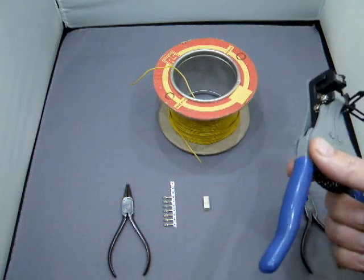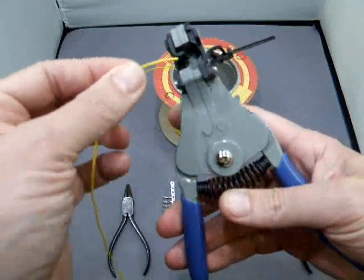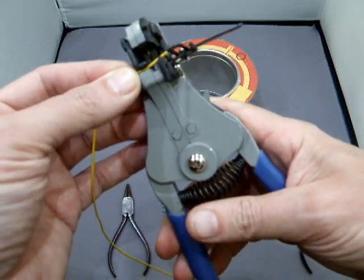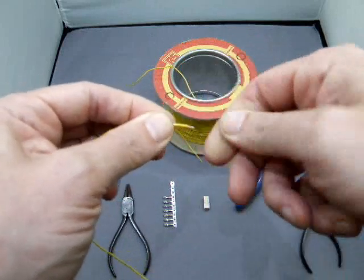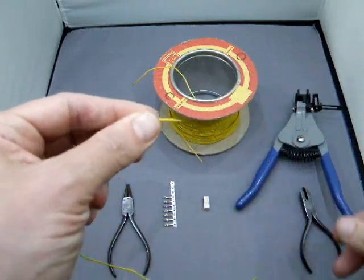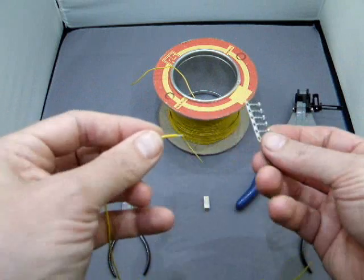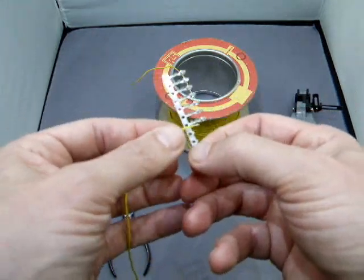You then need to strip about 2mm of the insulation. Give it a bit of a twist to stop the wire splaying out, and then insert it into the crimp.